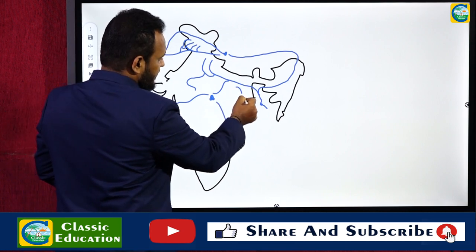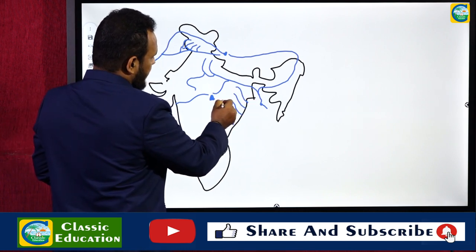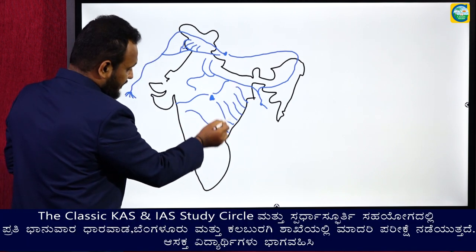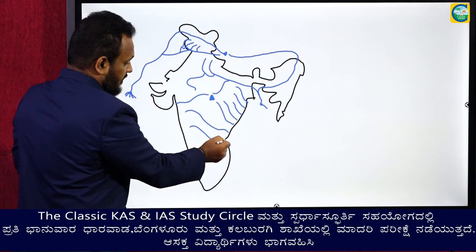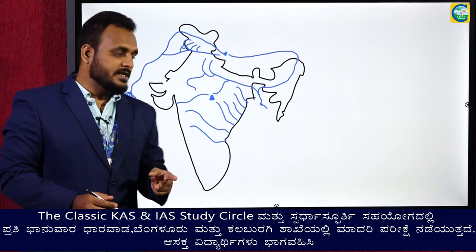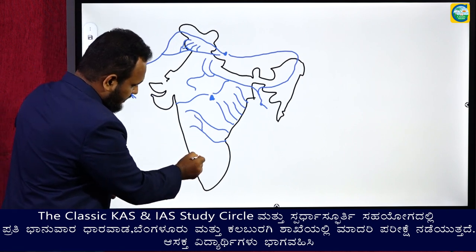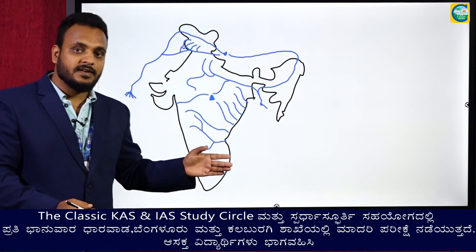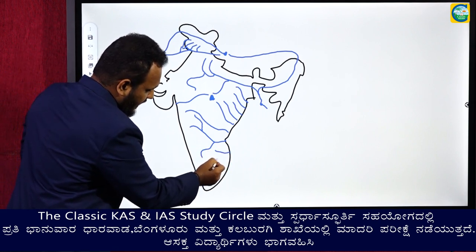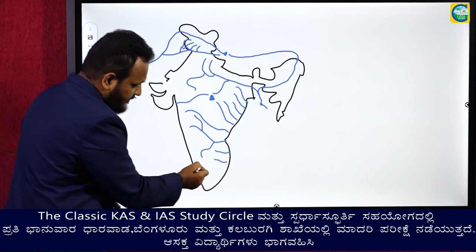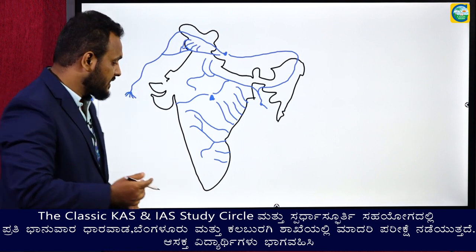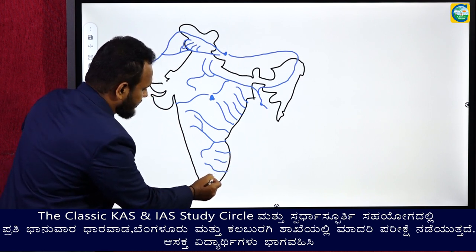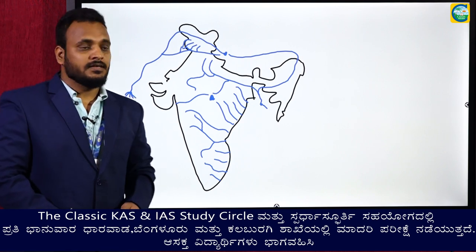We have Subarnarekha, Brahmani, Baitarni, and Mahanadi. After that we have Godavari river, and one more river in parallel to Godavari called Krishna river. Krishna river has two important major tributaries: one is Bhima river and the other is Tungabhadra river. On the southern side, in Andhra Pradesh, Tamil Nadu, Karnataka, and Kerala, we have Pennar river and Palar river. We also have an important river of Karnataka called Kaveri, which flows to Tamil Nadu, then to Pondicherry. There is also a river called Vaigai. These are the most important rivers in India.